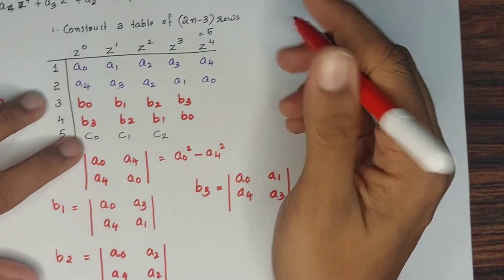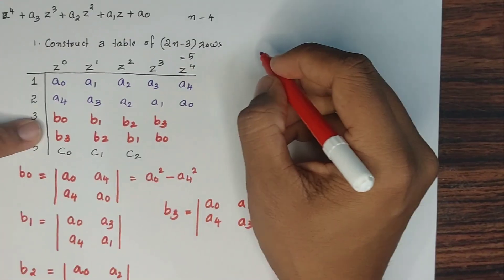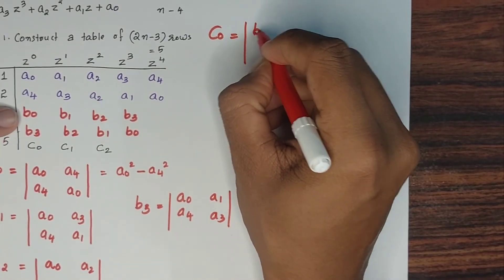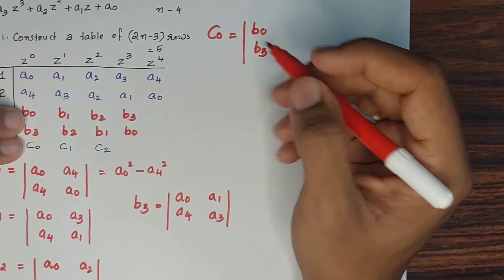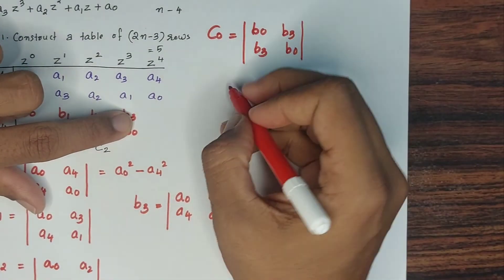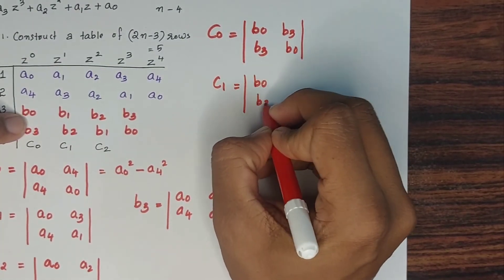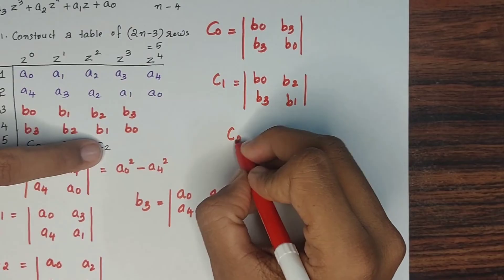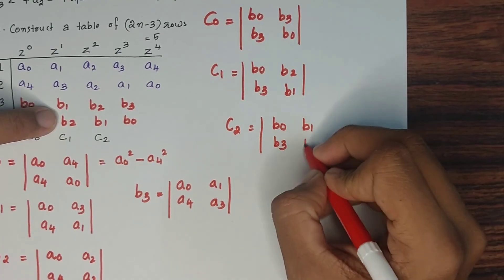For the C-row: C0 is the determinant |B0, B3; B3, B0|. C1 is |B0, B3; B2, B1|. C2 is |B0, B3; B1, B2|. These values fill row 5 of Jury's table.